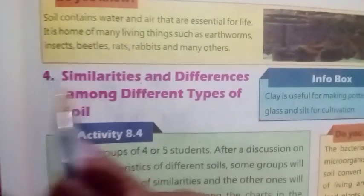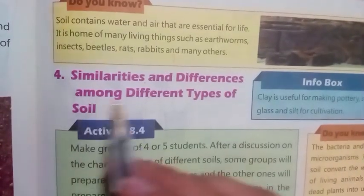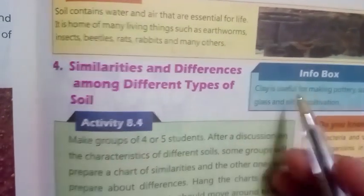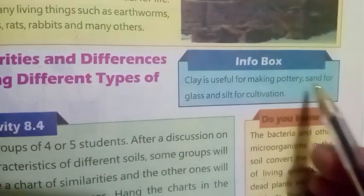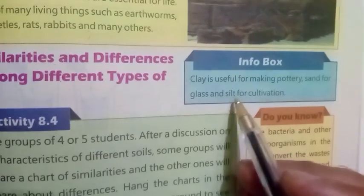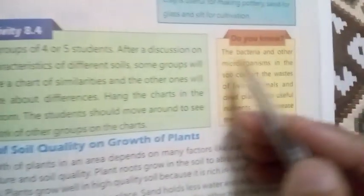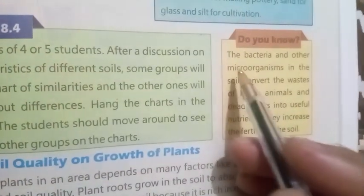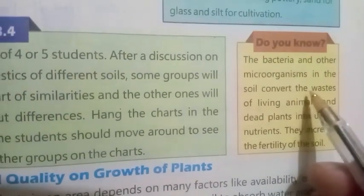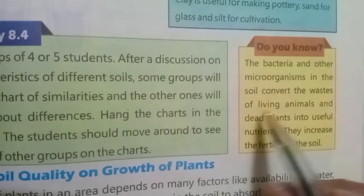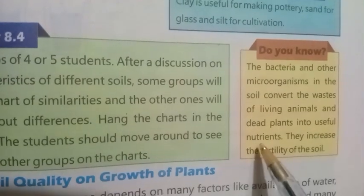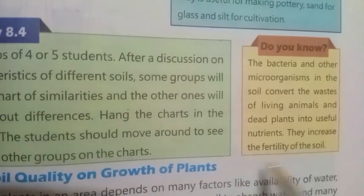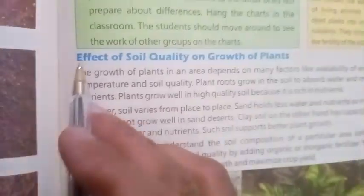Number four: Similarities and differences among different types of soil. Info box: Clay is useful for making pottery, sand for glass, and silt for cultivation. Do you know? The bacteria and other microorganisms in the soil convert the wastes of living animals and dead plants into useful nutrients. They increase the fertility of the soil.